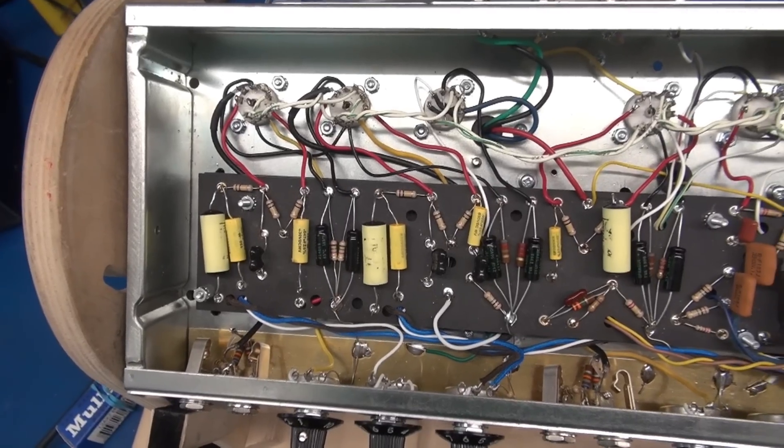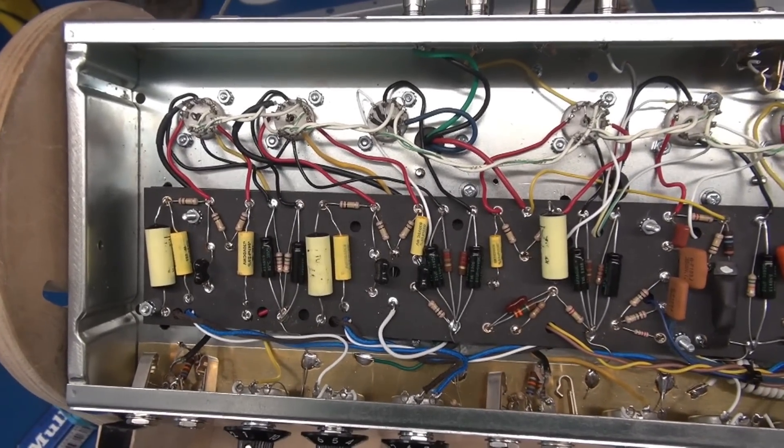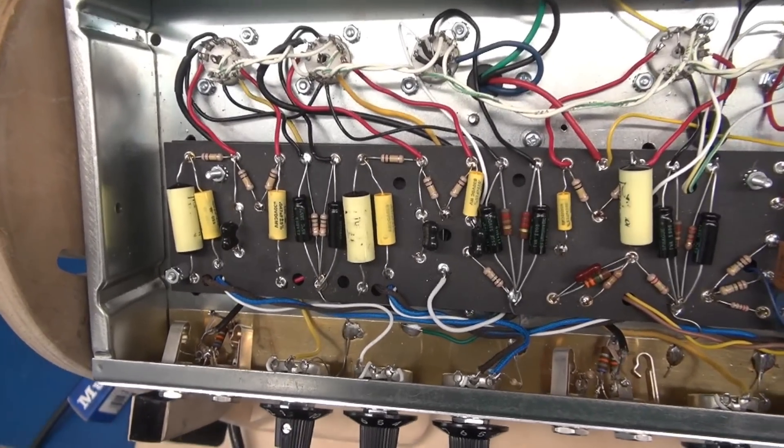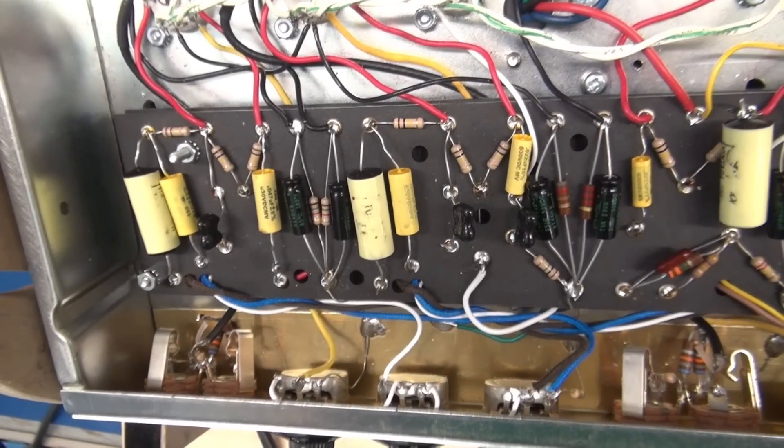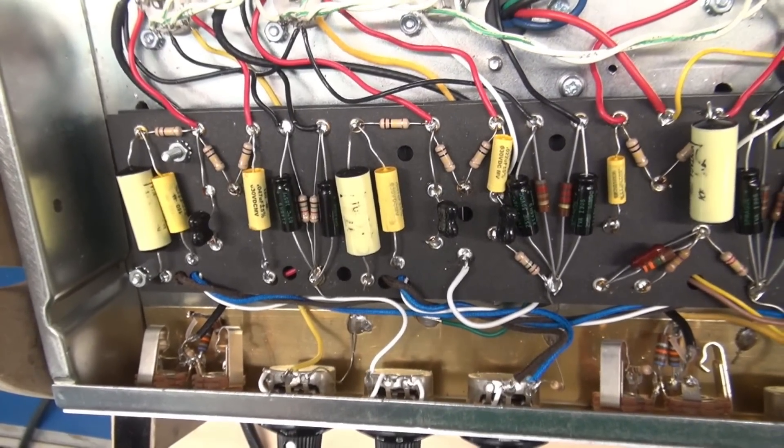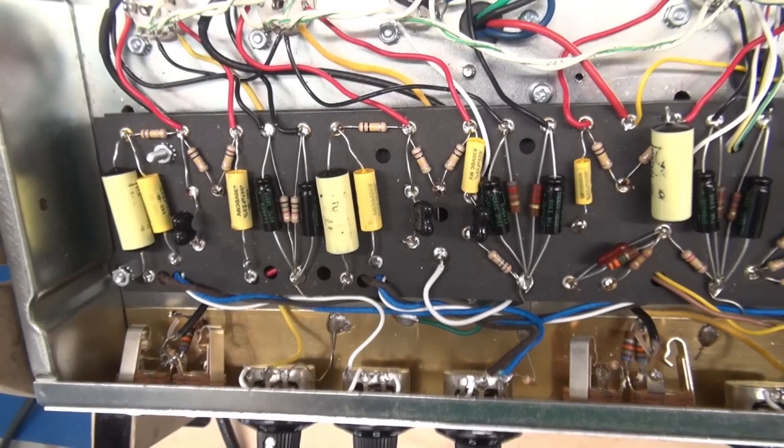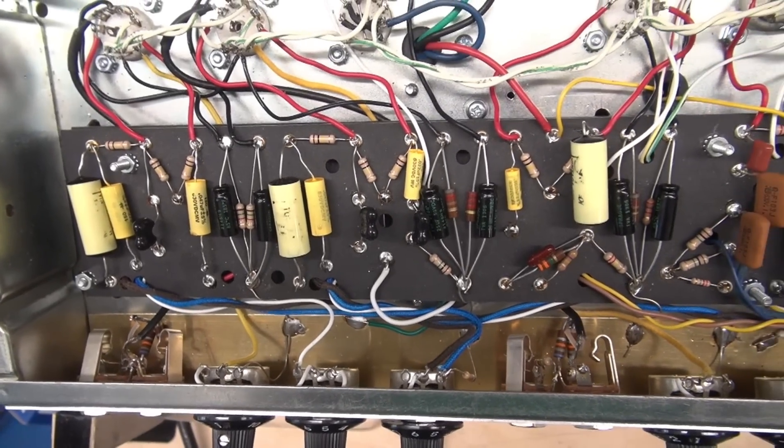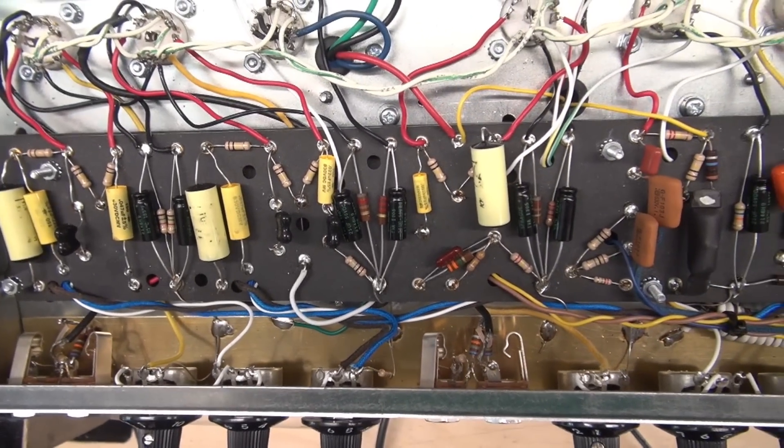So the project is not 100% complete. I'm still awaiting a few components. But I'll give you a little quick tour. You can see I installed the fender brass grounding plate. I also changed all the pots from alphas to CTS.